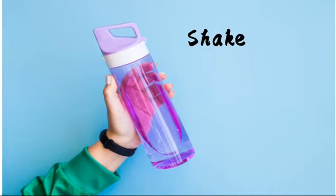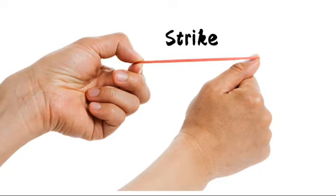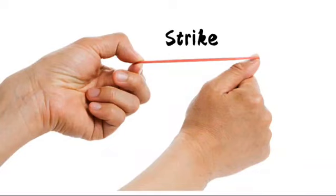The next way to produce sound is to shake. You can shake a bottle to produce sound. Another way is to strike — for example, you can use a rubber band by stretching it and releasing it to produce sound.